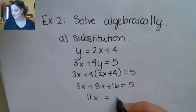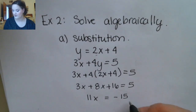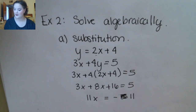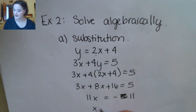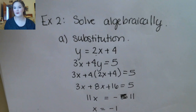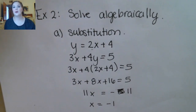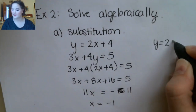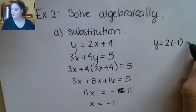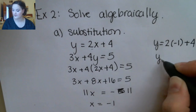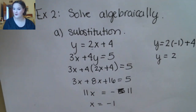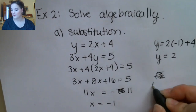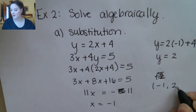Negative 11... so x is negative 1. Now remember when you're solving this way, you still need to solve for the other variable, so I'm going to plug back in to get the value for y. And my final answer should be written as an ordered pair — the ordered pair negative 1 comma 2.